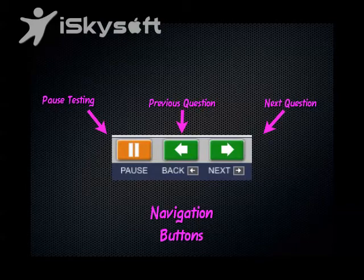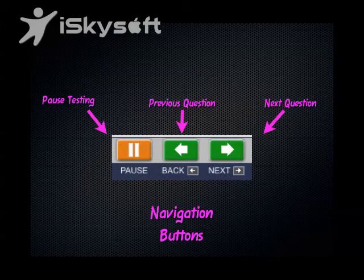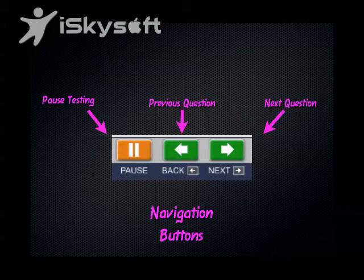Here are the navigation buttons. In the bottom right-hand corner on the math screen, there are three buttons: pause, back, and next. The pause button literally pauses the test — this is only available in the practice test, not the actual full MCA test. Students can hit pause, go to the restroom or whatever they need, come back, and resume their test. The back button allows them to go back to the prior question, and the next button goes on to the next.